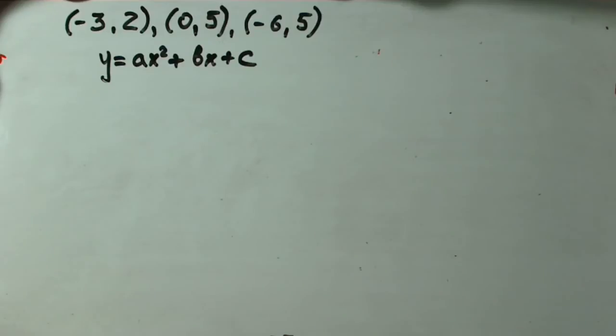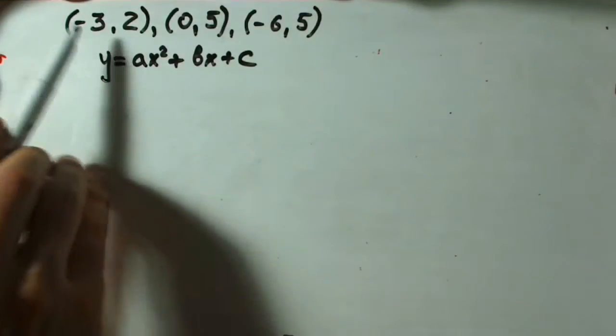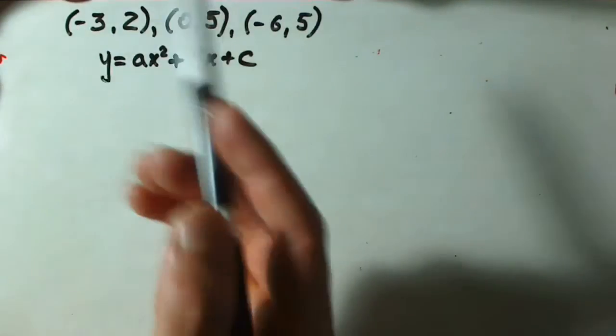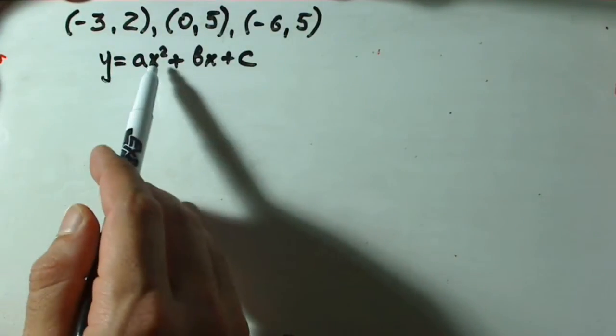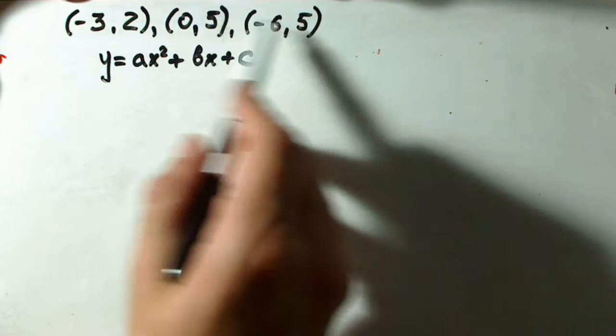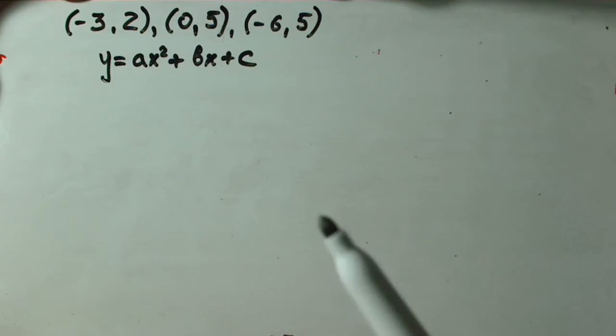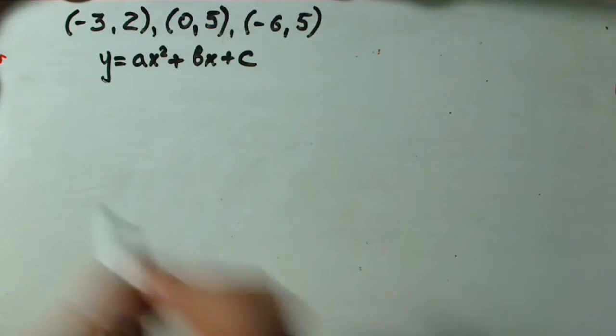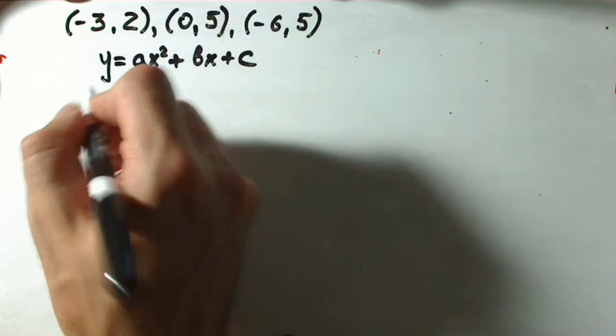Now what to do with this? Because we know the points, it means we are given x and y values. We just plug in to our basic formula and we are going to have a system of three equations. We are just solving it and find a, b and c. That's it. Let's try to do it.